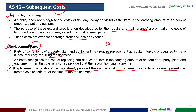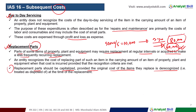When a replacement part is capitalized, the original cost of the item is derecognized. For example, if we purchased a machine at $35,000, we derecognize the original part and capitalize the new replacement part. The carrying amounts are adjusted accordingly. This is a very important scenario when we replace parts — you can apply the relevant accounting standard.